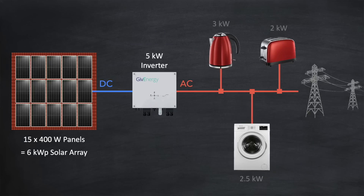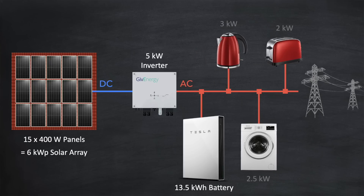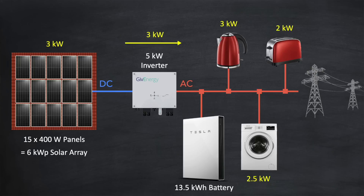Let's now swap the DC coupled battery for an AC coupled one — the Tesla Powerwall, which can hold 13.5 kilowatt hours of energy. With all three appliances switched on, the total power requirement is 7.5 kilowatts. With only 3 kilowatts of solar generation, there's still 4.5 kilowatts to find. The Tesla Powerwall has a discharge rate of 5 kilowatts, so it can easily meet that requirement. If the Powerwall is full, we can calculate how long it will last by rearranging our energy formula: time equals energy divided by power — 13.5 divided by 4.5 is exactly 3 hours.